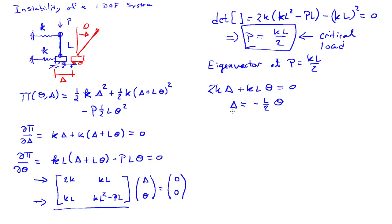And so I'll find out that delta is equal to minus L over 2 theta. So if I were to draw the system in its deflected shape, it's telling me that the motion and the rotation are opposite of each other.